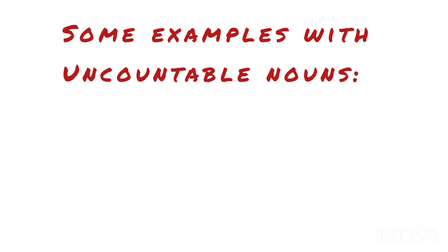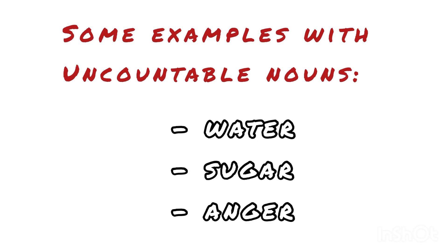And here are some examples with uncountable nouns: water, sugar, anger. We can't say I want a water.